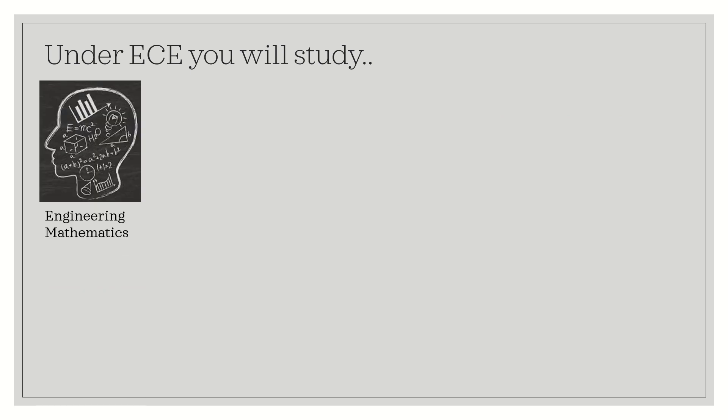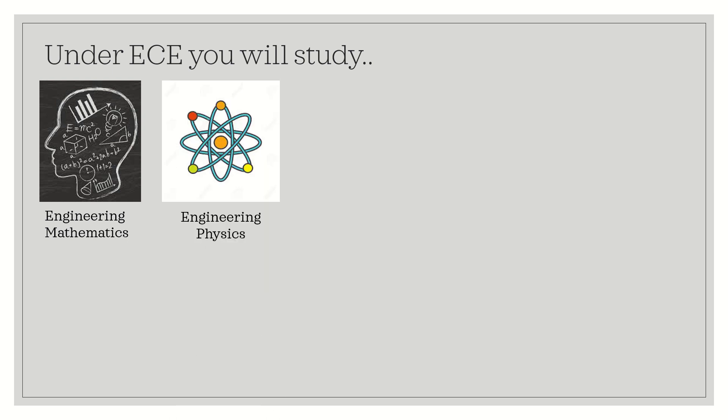The first subject you will learn is engineering mathematics. There are at least three to four papers of mathematics — named Mathematics 1, 2, 3, and 4. You will learn mathematics from scratch and go to the level of Fourier transforms, integral calculus, and differential calculus at a very high level. It is not at the plus two level — when you come into engineering, particularly ECE, you will have four engineering mathematics papers and each of them will be very interesting.